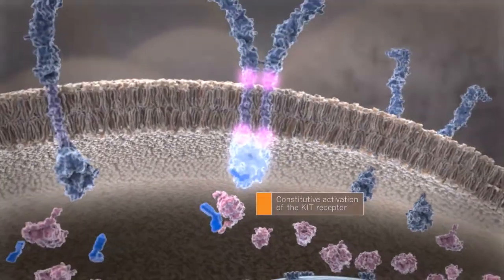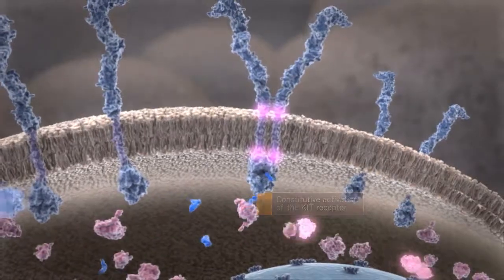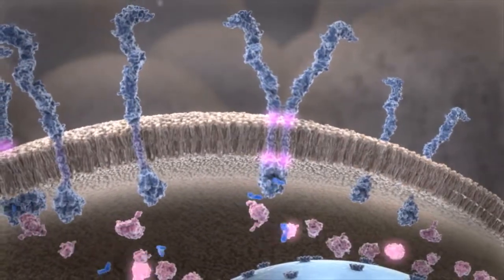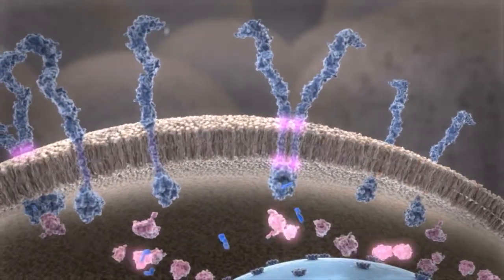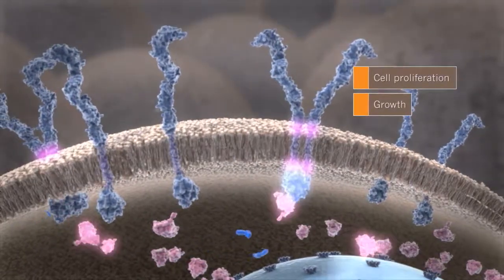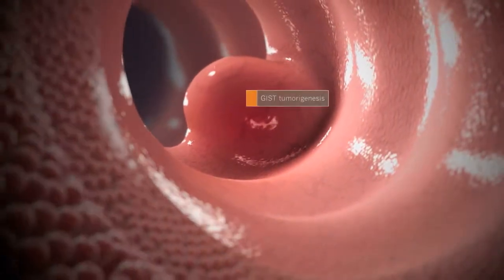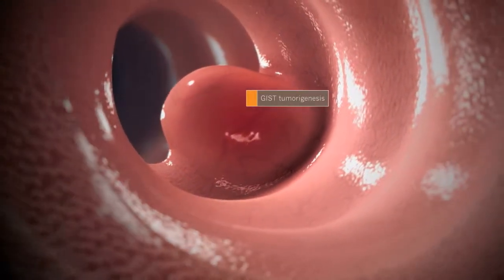This allows for constitutive oligomerization and activation of the KIT receptor. These mutant KIT proteins can drive continuous oncogenic signaling, leading to an increase in cell proliferation, growth, and survival, which can ultimately lead to the formation of a gastrointestinal stromal tumor, or GIST.